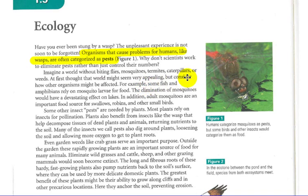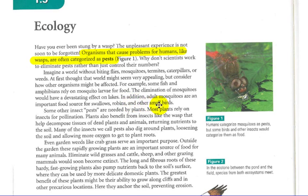Imagine a world without biting flies, mosquitoes, termites, caterpillars, or weeds. At first it would be appealing to not have mosquitoes stinging you constantly. But of course, that affects other animals within a food chain or a food web. For example, some fish and amphibians rely on the mosquito larvae for food. The elimination of mosquitoes would have devastating effects on lakes. Adult mosquitoes are also an important food source for swallows, robins, and other small birds. So if we eliminated these so-called pests, it would affect other animals and organisms up the food chain.